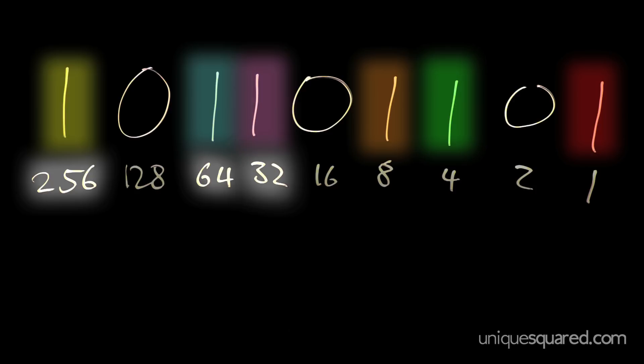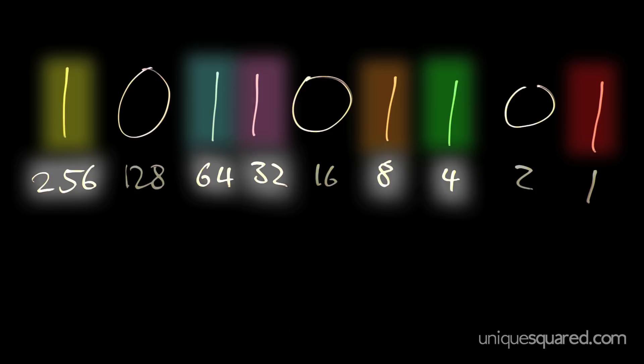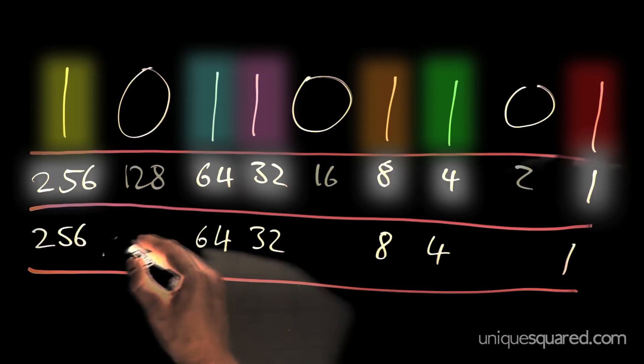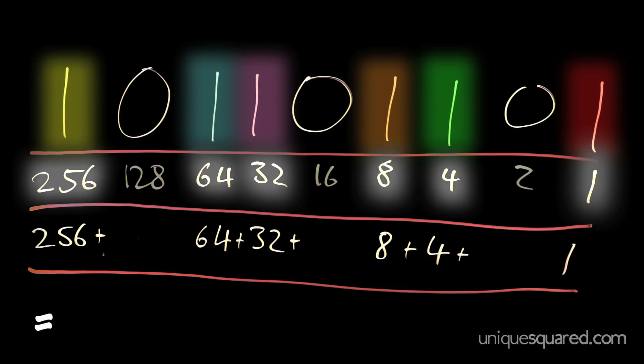32, 8, 4, and 1. Add them together, and you've got 365. So, the value of this binary number is 365.